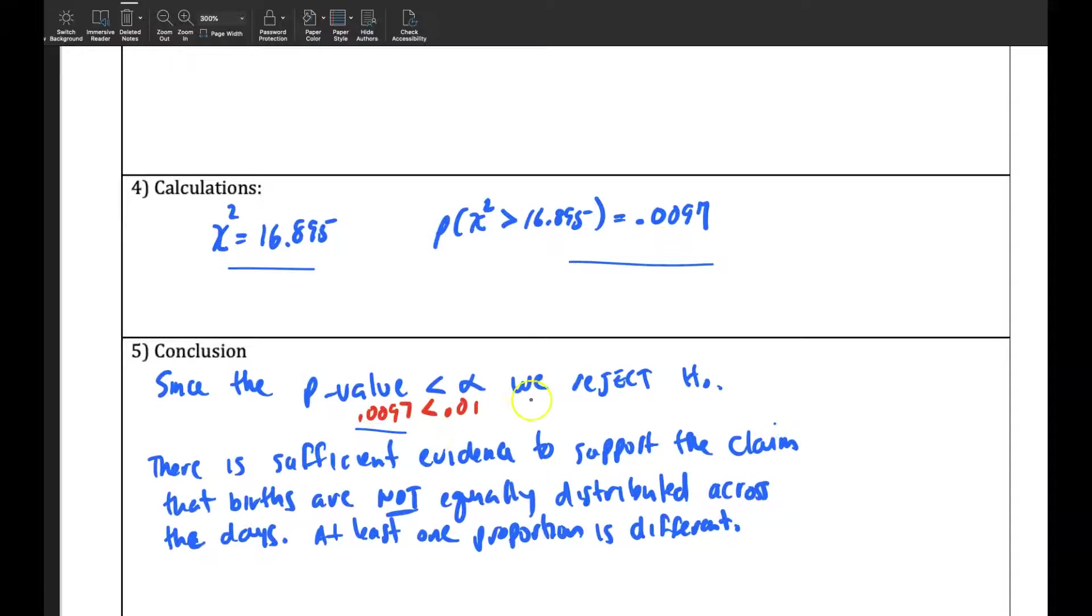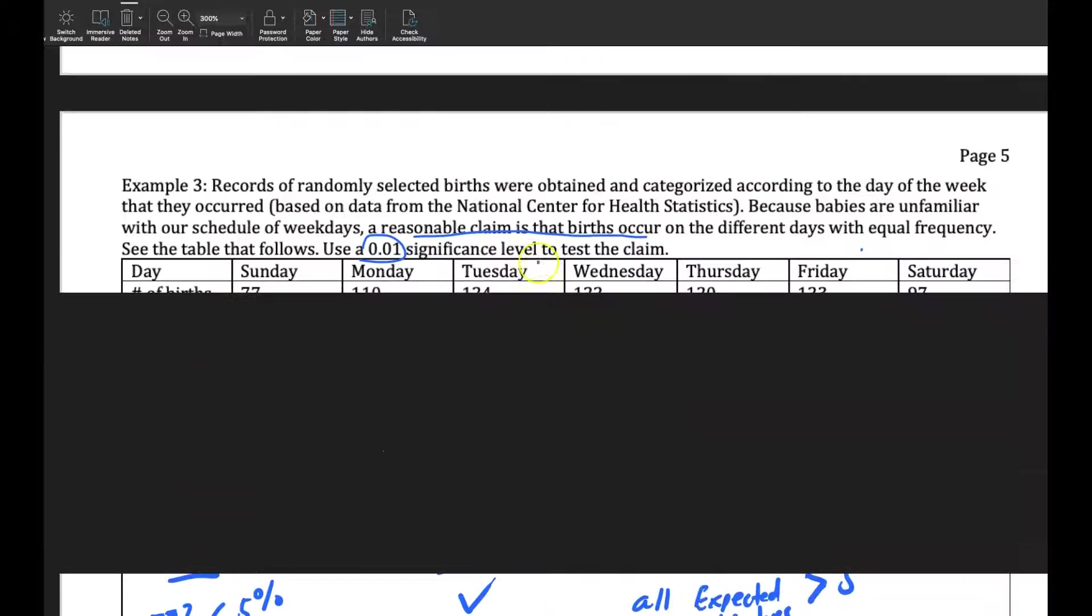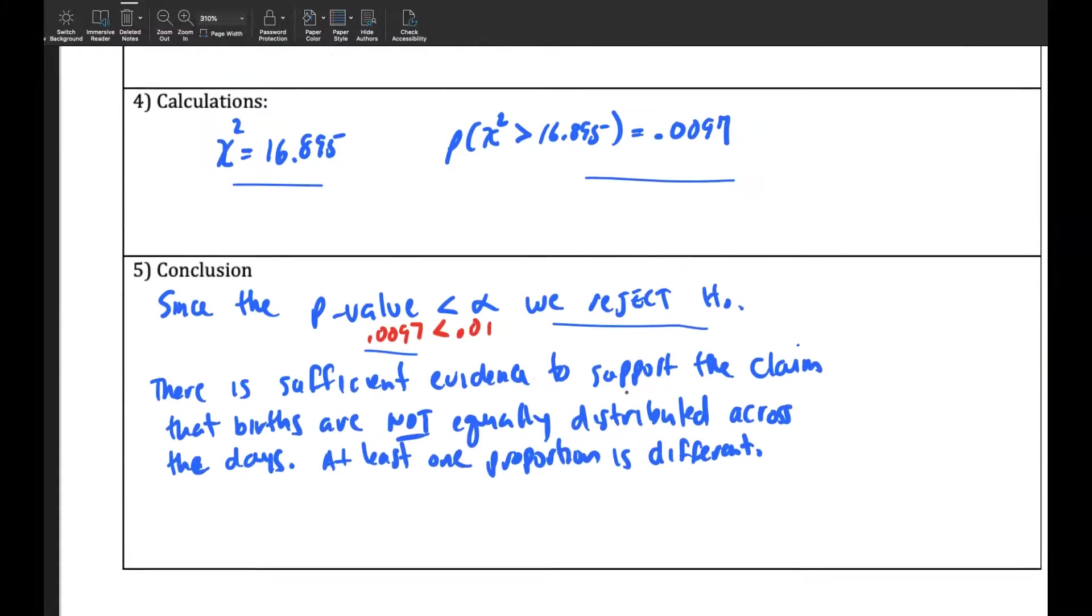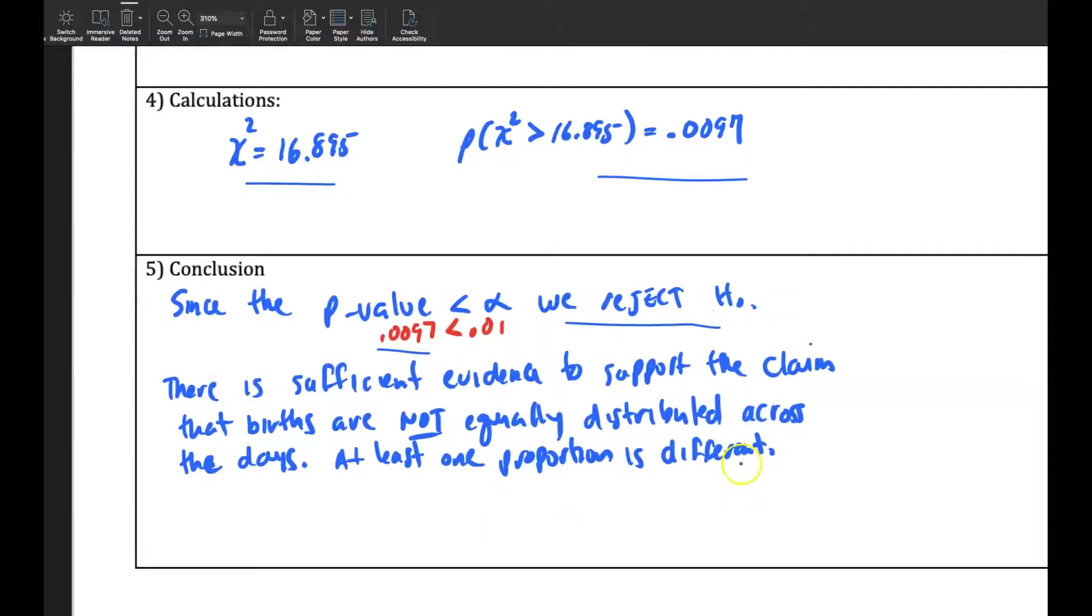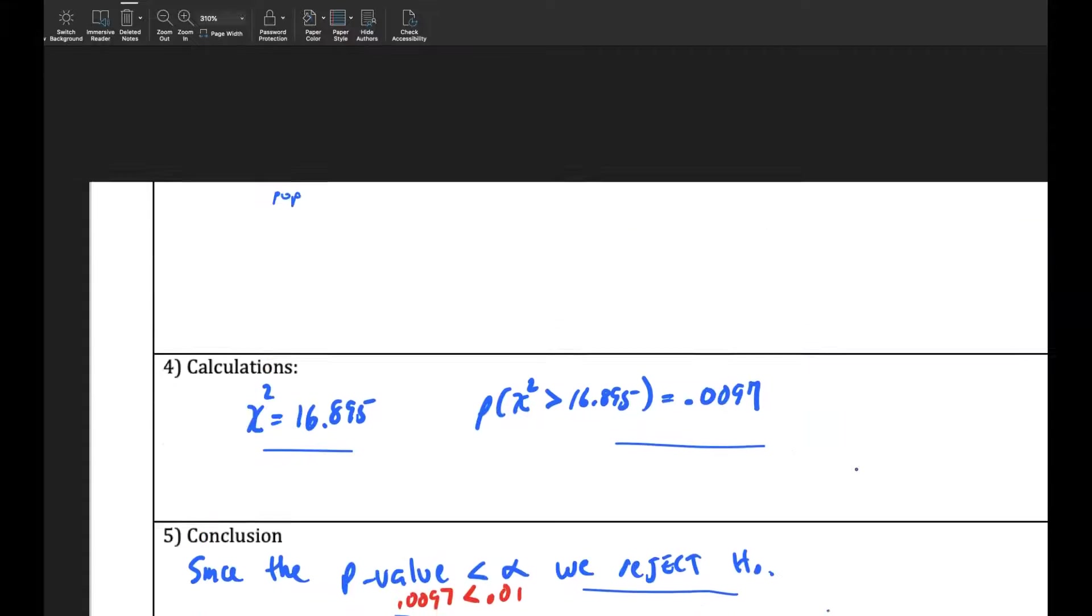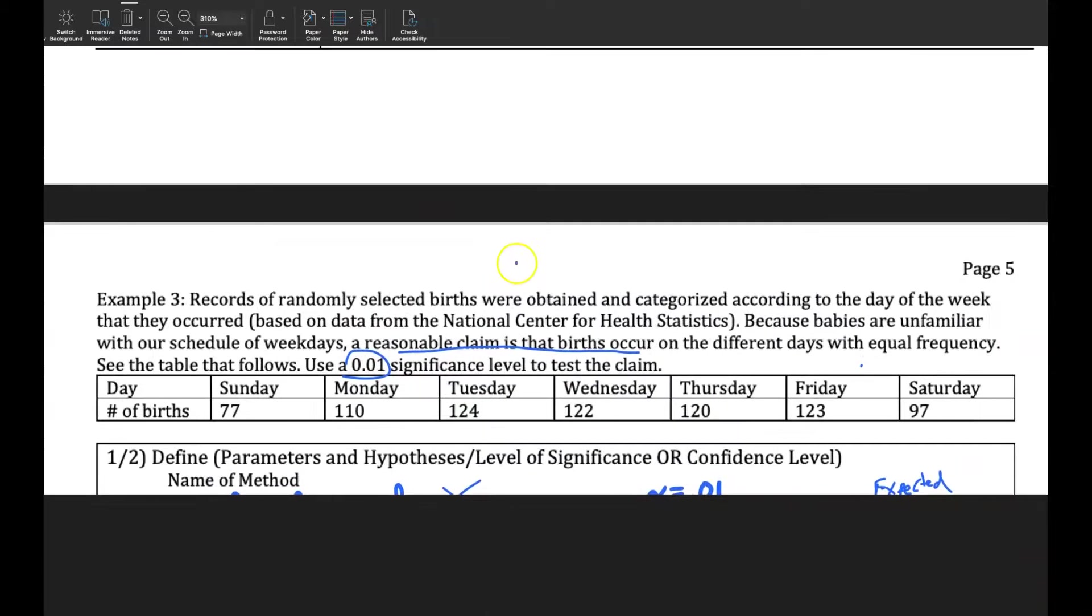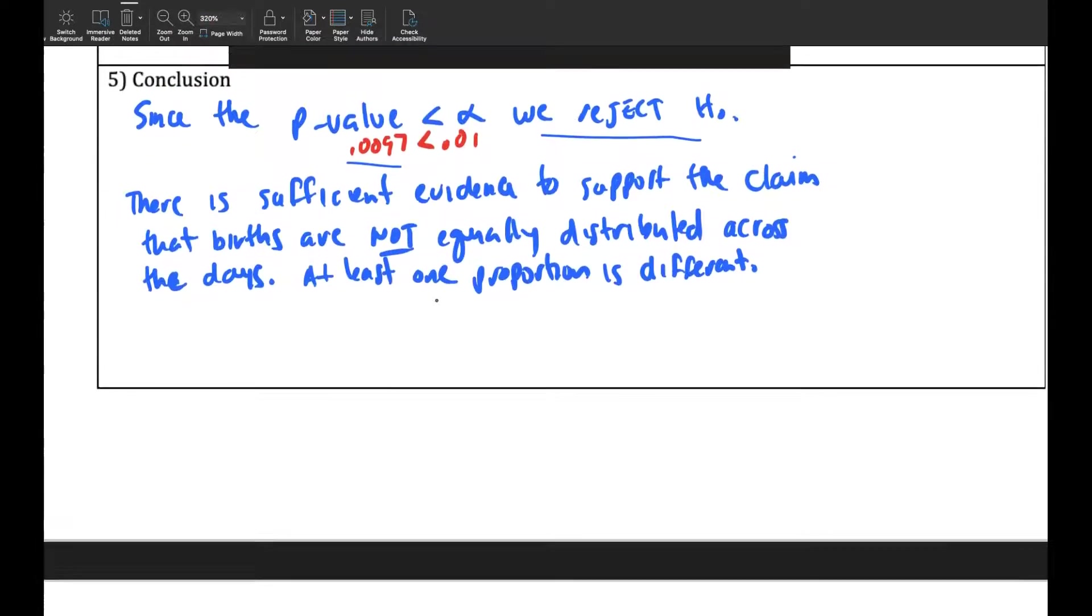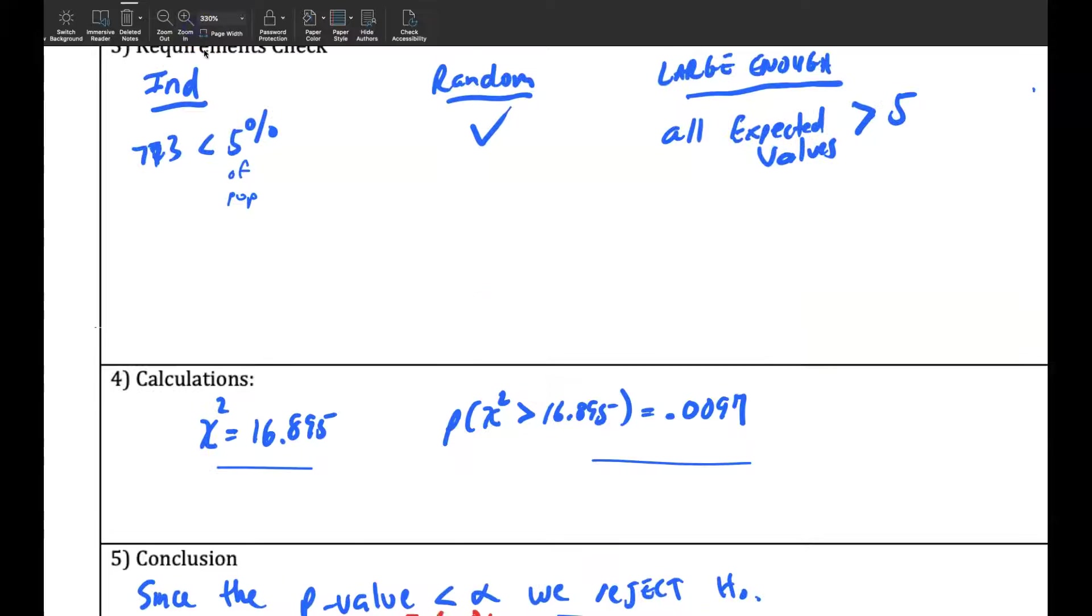Since the p-value is smaller than alpha, we reject the null hypothesis. So we're rejecting this and saying that's true. So we do have sufficient evidence to claim that births are not equally distributed across the day. So for some reason, more births happen differently across the days. They're not equally distributed. And so then that's your chi-squared test.